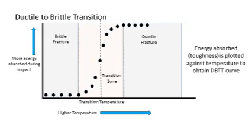How a material's toughness changes with temperature is what is plotted in the DBTT curve. The brittle and ductile fracture regions of the curve are seen on either side of the transition zone where the transition temperature lies.